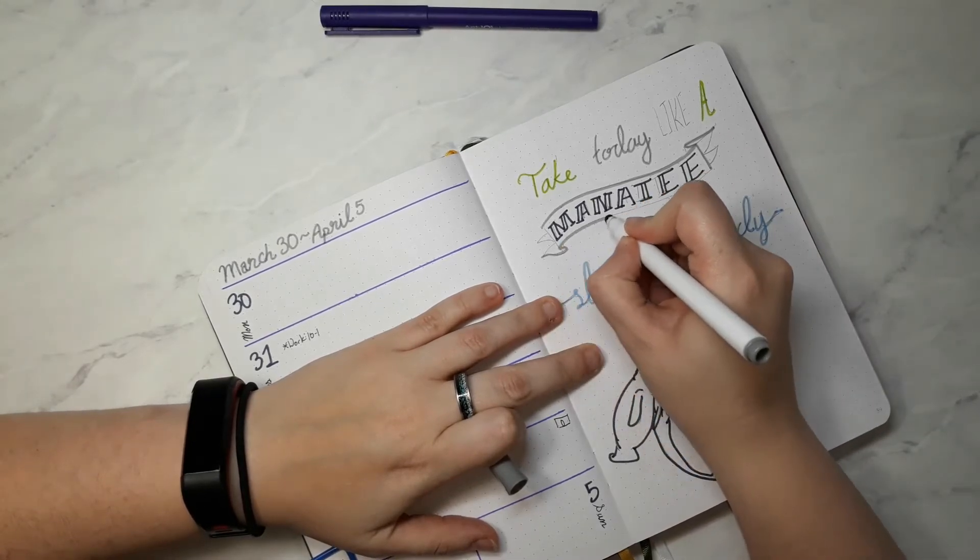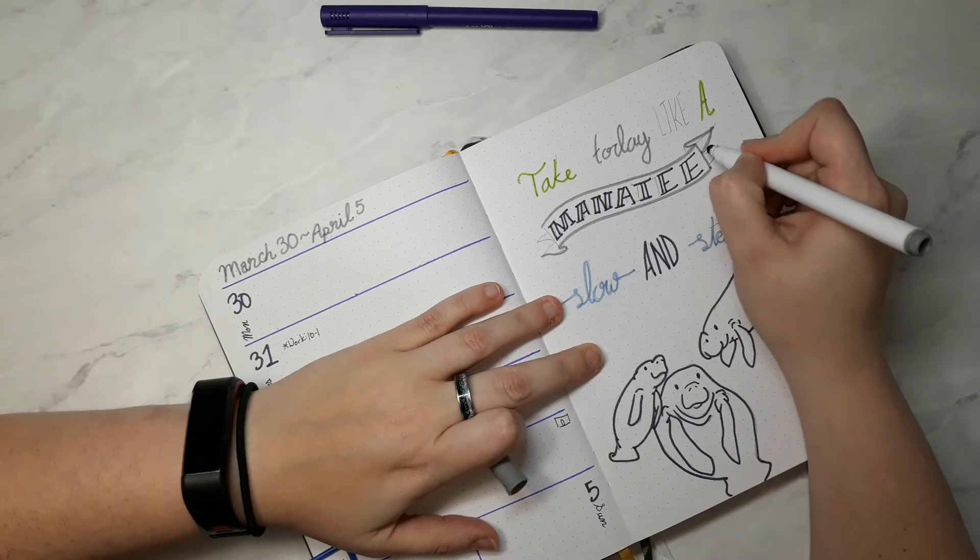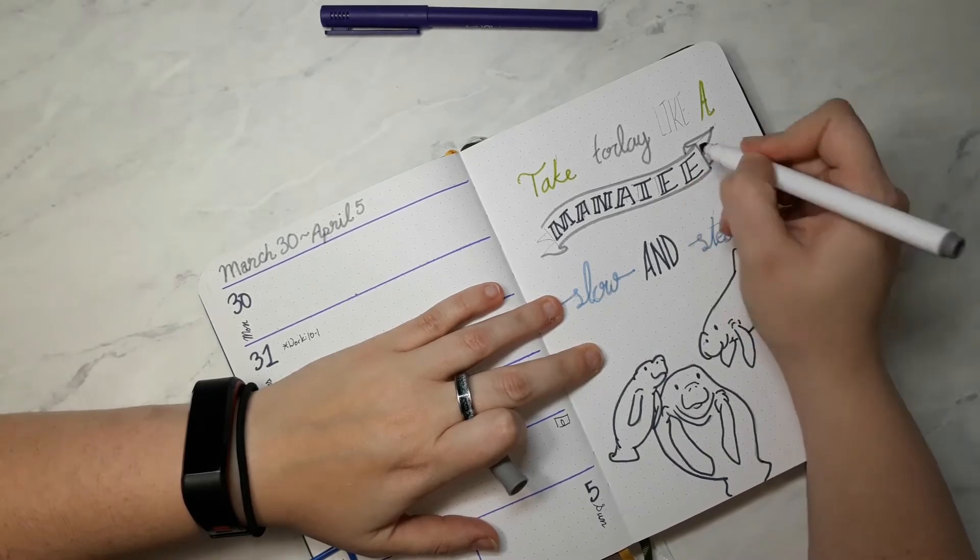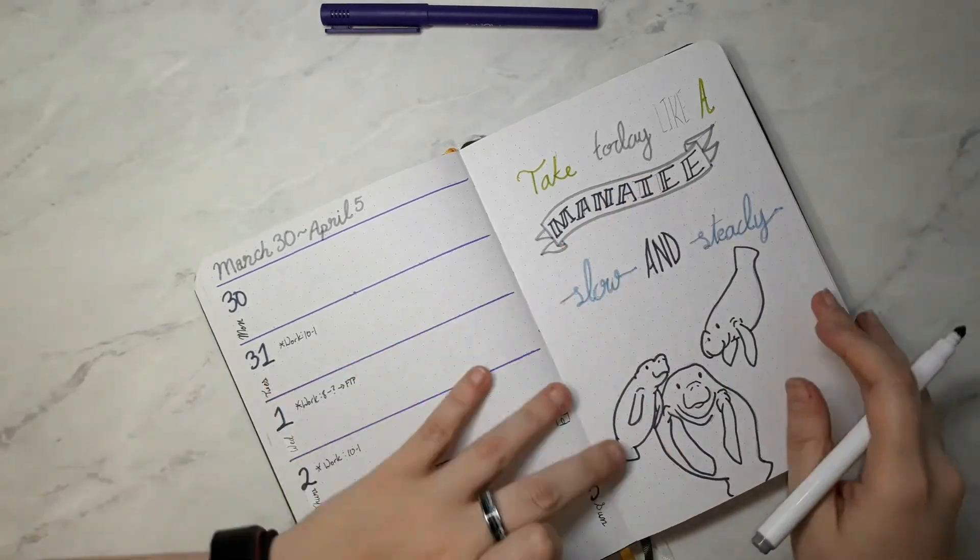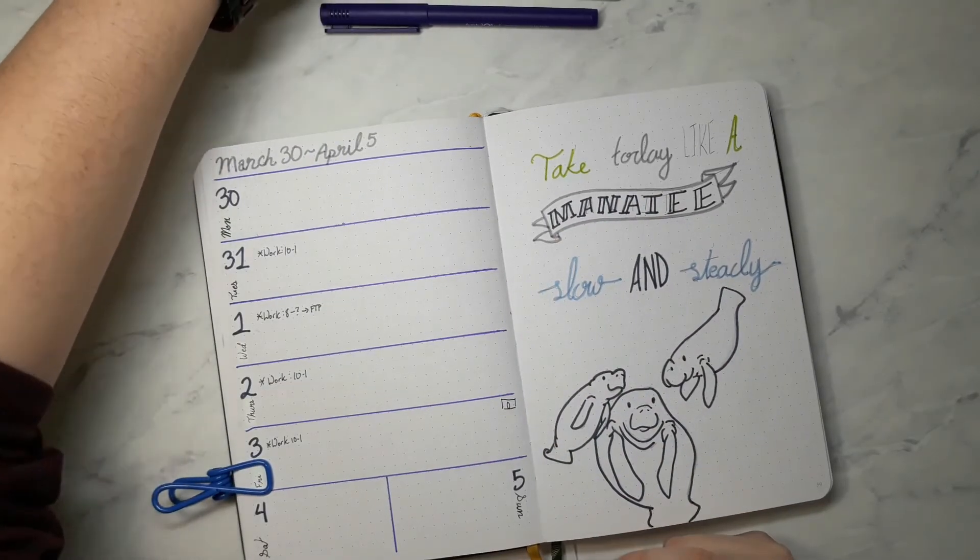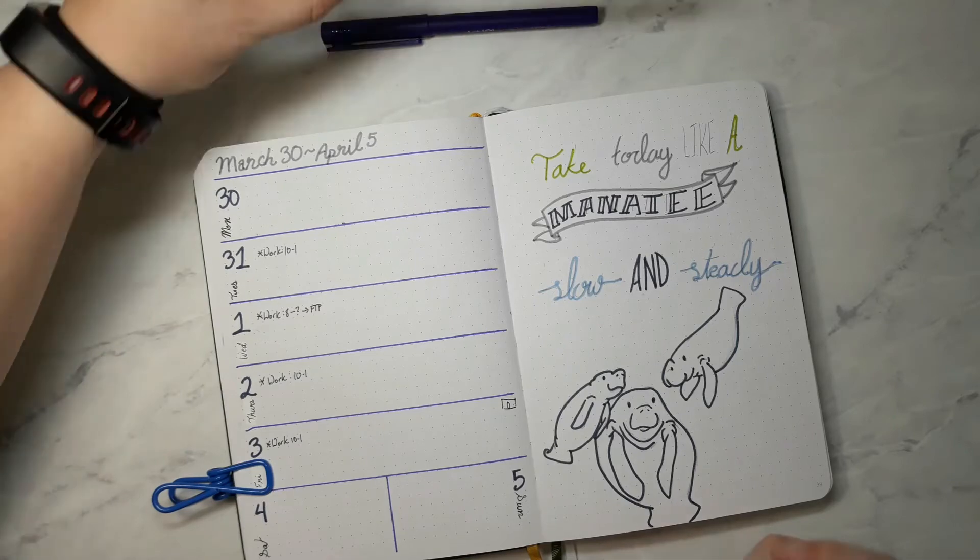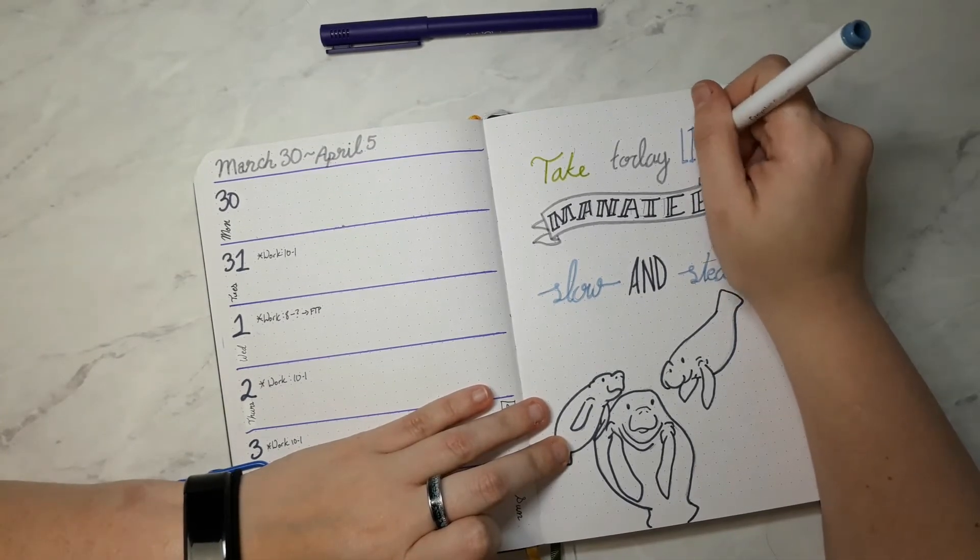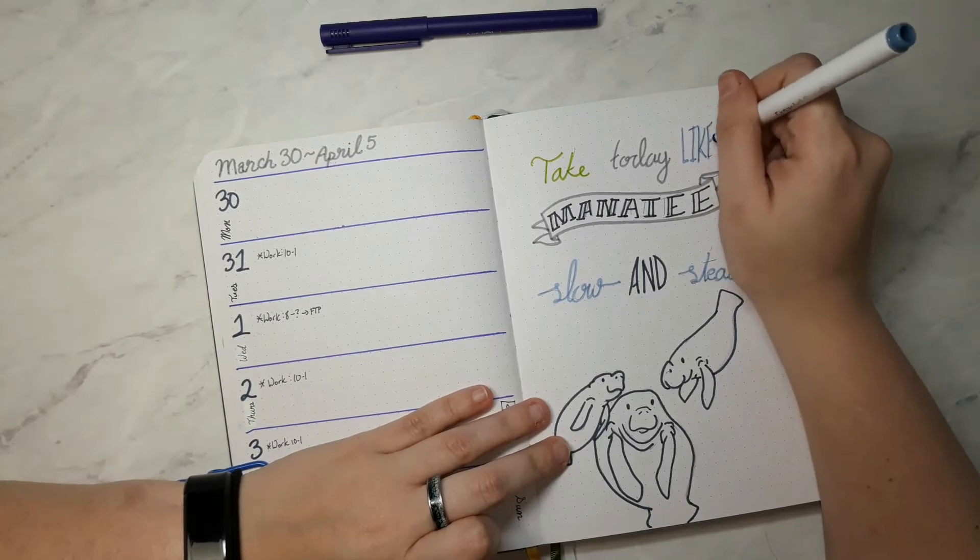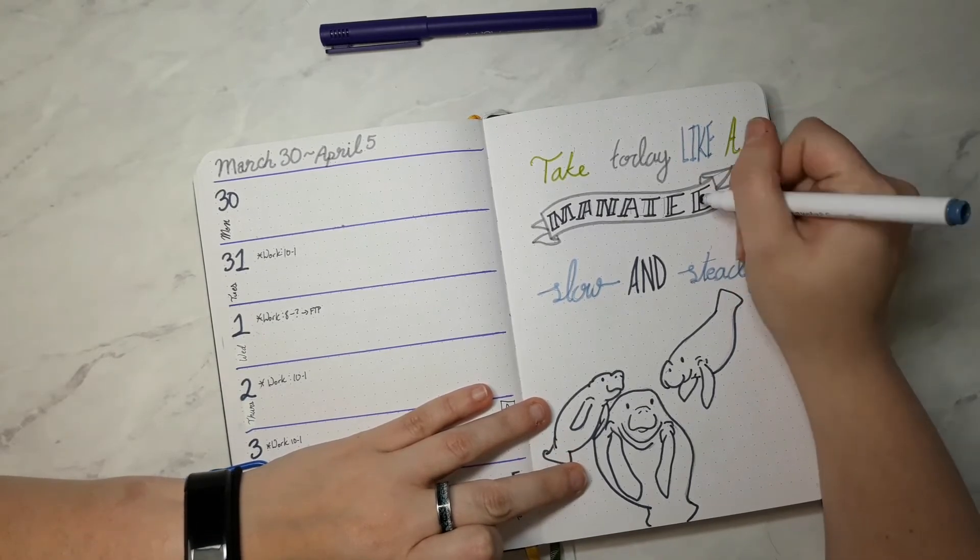Later on you'll see I did try to shade just a little bit on one of the baby manatees and the mama manatee, but these super tips just did not want to do what I wanted them to. If I had done these with my Tombow dual brush markers, they probably would have shaded better.